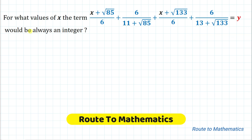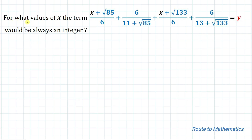Hello everyone, welcome to Root to Mathematics. In this video, we're going to solve an interesting question. The given question is: for what values of x does the term (x + √85) / 6 + 6 / (11 + √85) + (x + √133) / 6 + 6 / (13 + √133) equal y, where y is always an integer?